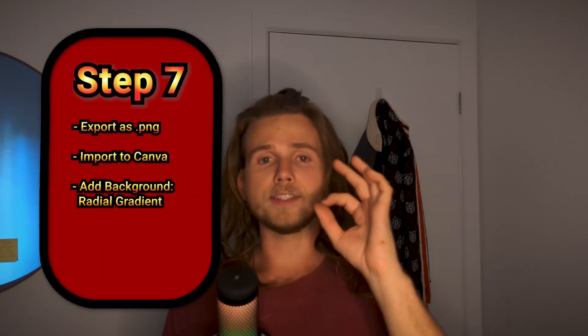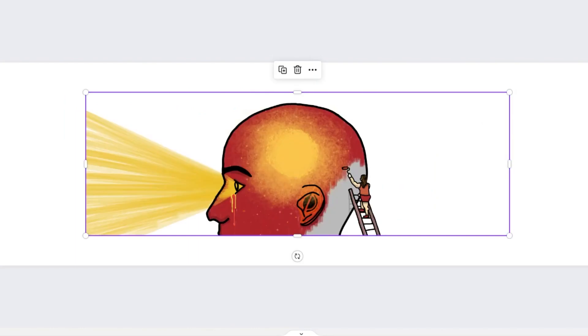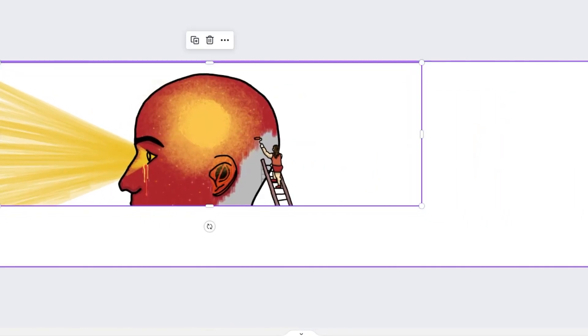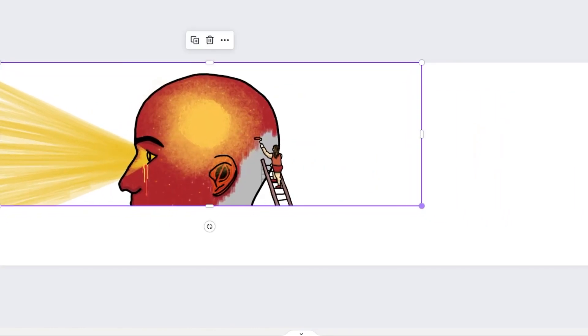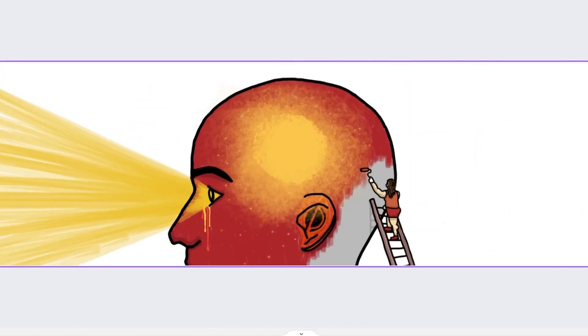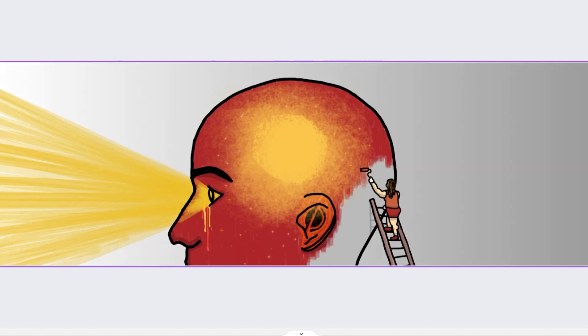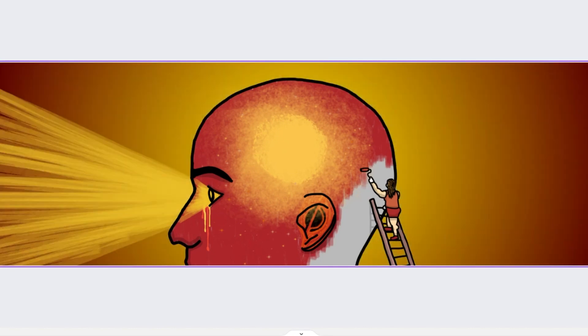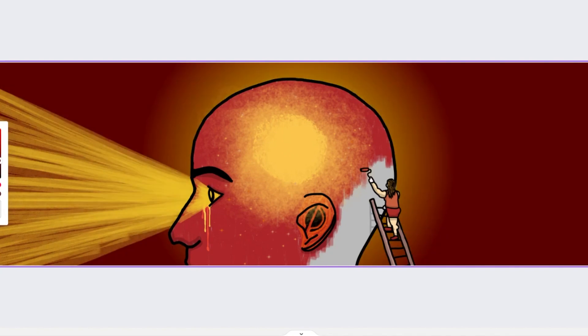Export the image as a transparent PNG file and import it to Canva. Here I like to add a background to the illustration. Click on the background color and choose gradient. I personally start with yellow, go over to red, and end up with a darkish red. Now download the file and you're done.